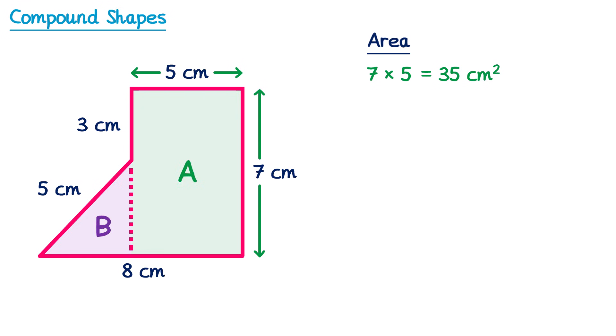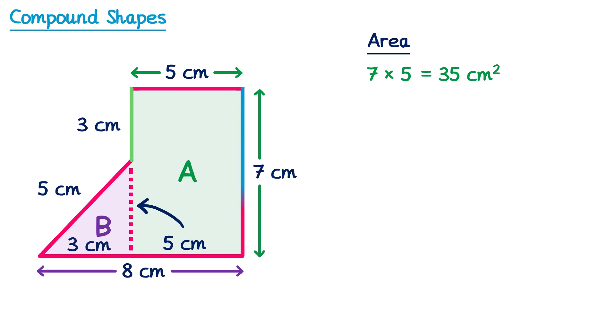Now for the triangle, there's a bit more work to do. We don't actually know the base or the height, so we need to work both of those out. The base is a horizontal line — at the top we have 5 centimeters, and at the bottom that 5 centimeters plus the base of the triangle must make a total of 8 centimeters. So 8 subtract 5 gives the base as 3 centimeters. For the height, that's a vertical dotted line. We have 3 centimeters on one side and 7 centimeters on the other, so 7 subtract 3 means the height of the triangle is 4 centimeters.